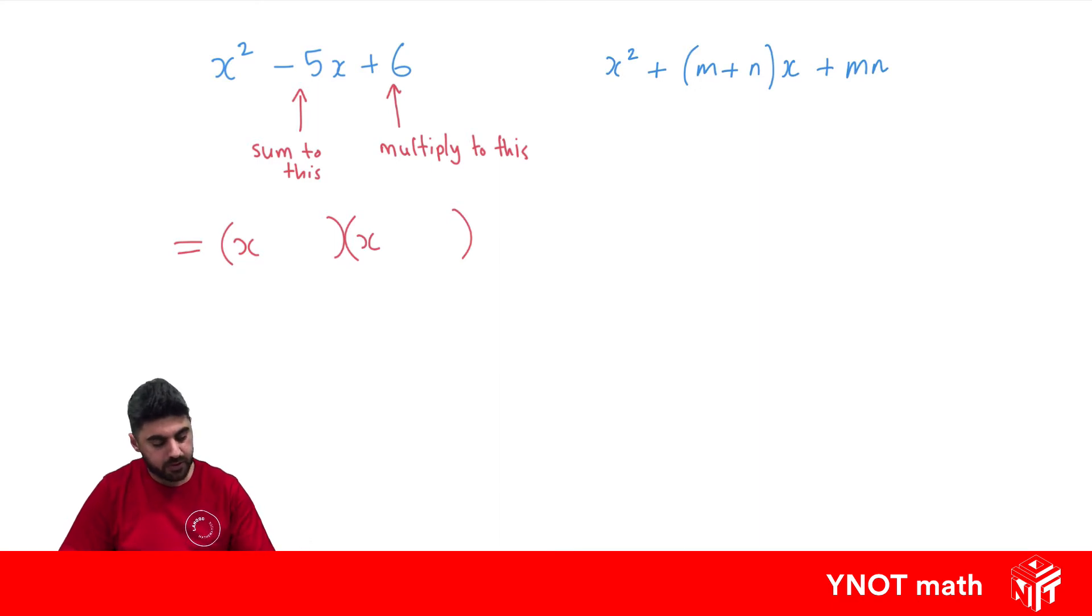Once we pick out two factors that multiply to positive 6 and add up to -5, we can write them in with their signs. So let's write out some factors of 6.